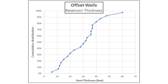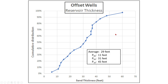Now we have to estimate the thickness for our prospect. We have some offset wells, and we can see how thick the target sand is. We plot these up on a cumulative distribution curve and get the average of the offset well thicknesses — the P10, P50, and P90. This gives us an idea of the range of thicknesses in the area, which we can then apply to our prospect. That's two parameters estimated — this is how you do it for each one.